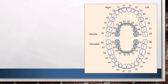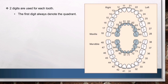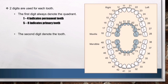The FDI system uses two digits for each tooth. The first digit always denotes the quadrant: one to four indicates permanent teeth and five to eight indicates primary teeth. The second digit denotes the tooth: one to eight are used in permanent teeth, whereas one to five are used in primary teeth.